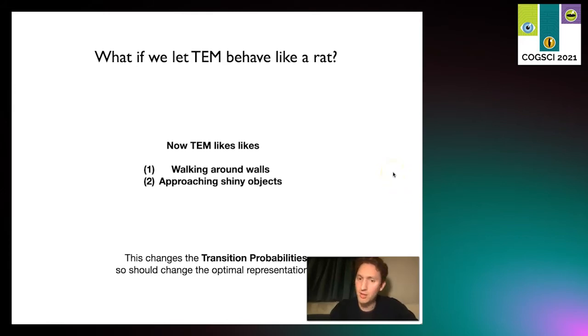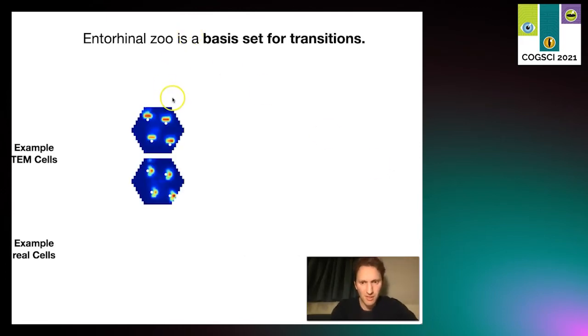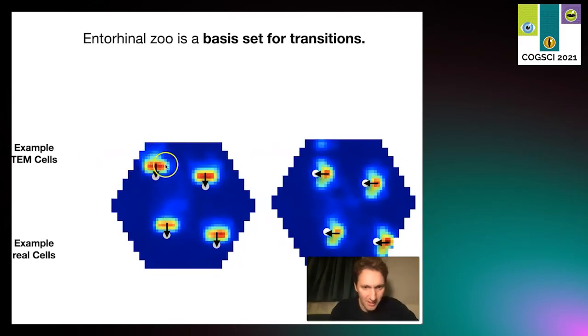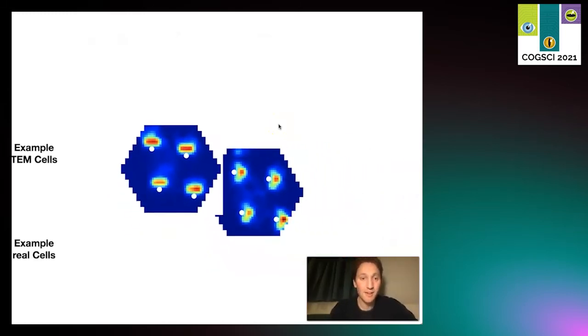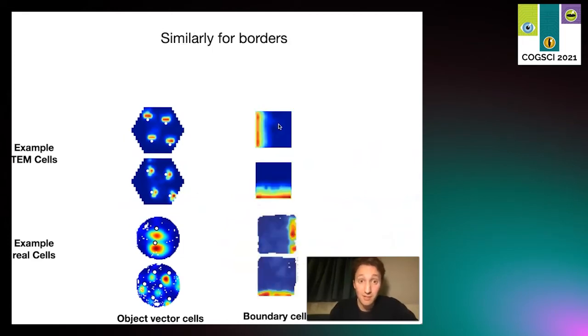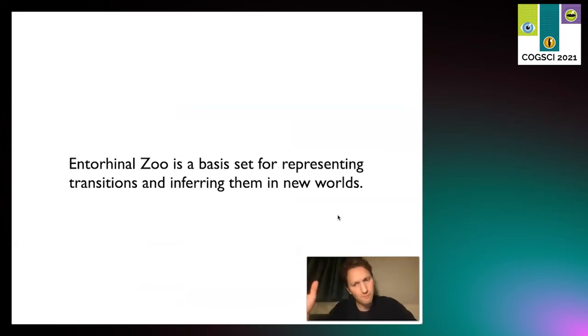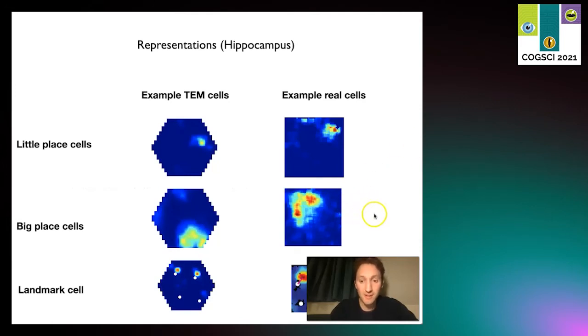That's just for diffusive behavior. What if we let this model behave a bit more like a rodent? Rats like hanging near walls or approaching shiny objects, and intriguingly, because that changes the transition probabilities, it will change the optimal representations you need to solve these tasks. If we do that, we get things that are like object vector cells. This is a cell here that responds always four pixels north of an object, and this one always is five pixels east of an object - exactly like object vector cells in the brain. Similarly, near borders, TEM learns border cell representations just like border representations in the brain. What that's saying is that all these funky cells you saw earlier, although they all looked very different, they all have the same underlying computational principles - trying to act as a basis set for learning and inferring transitions in worlds.